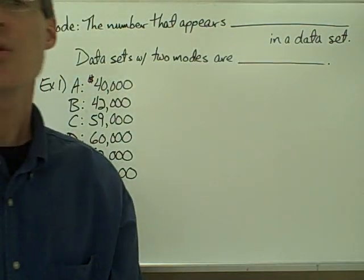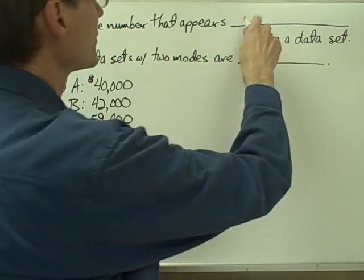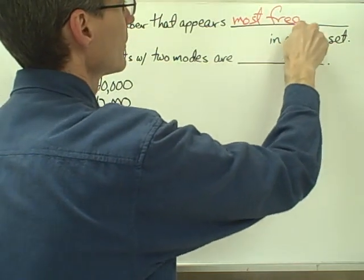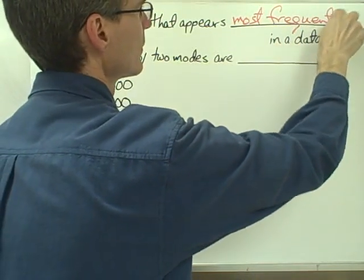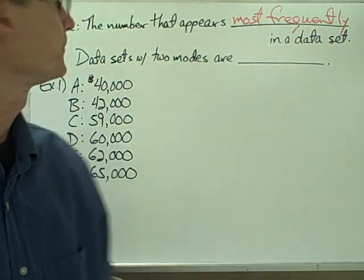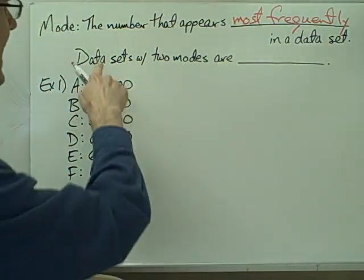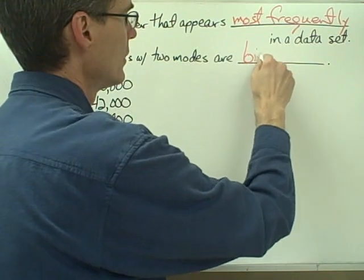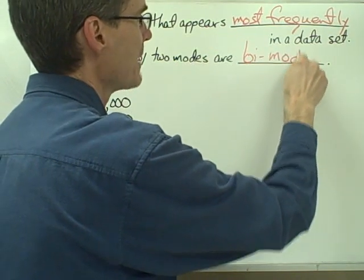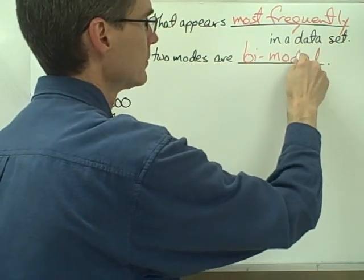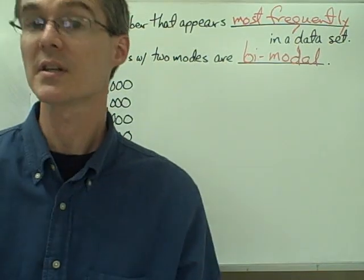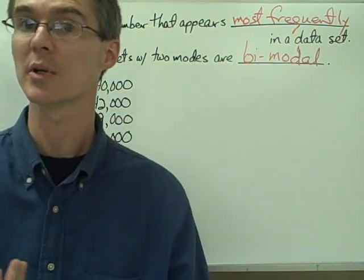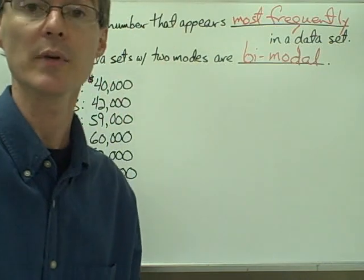The mode is just the number that appears most frequently in a data set. Some data sets have two modes, in which case you call those data sets bimodal. Occasionally you have a data set that doesn't have a mode at all — if all values only appear one time, that data set has no mode.